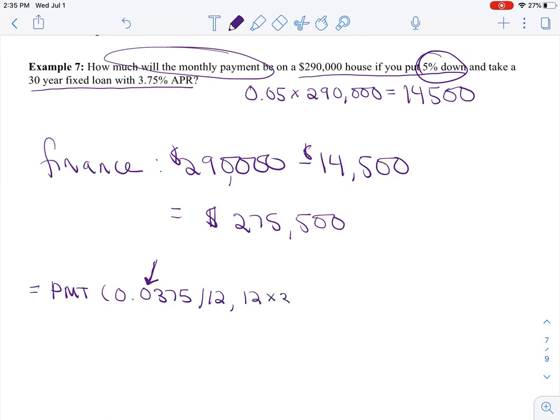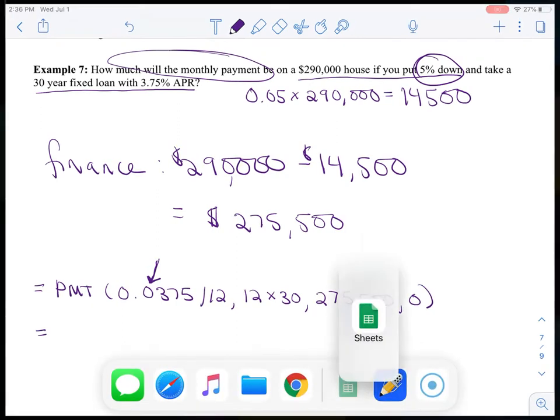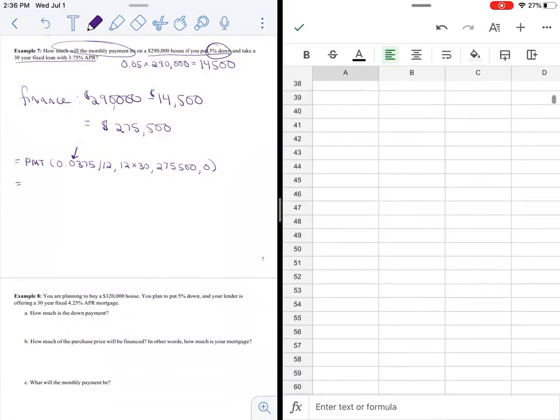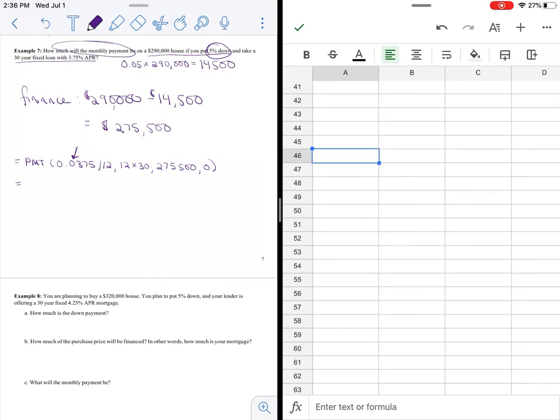I'm going to have this for thirty years, and really what I'm financing is two hundred seventy five thousand five hundred dollars, and I want this loan to be zero at the end of those thirty years.